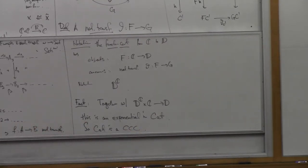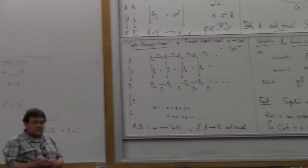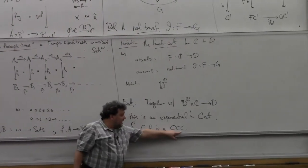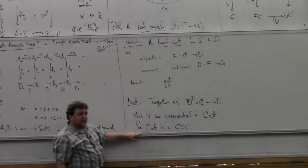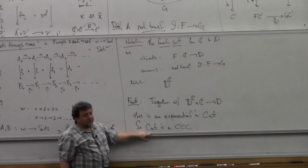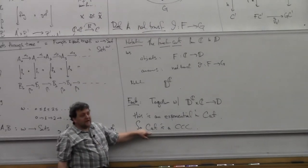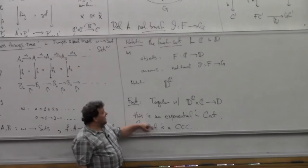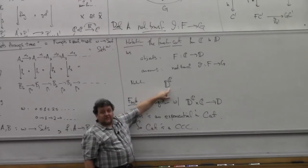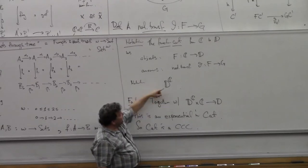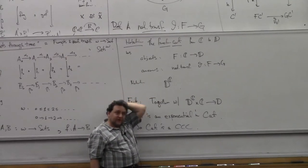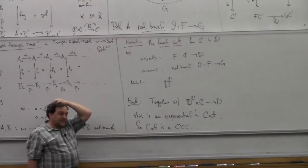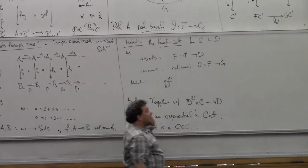That's kind of cool — what it tells us is that we've got the definition of natural transformation right. If we start out asking for a Cartesian closed structure on Cat, we know there's only one if there is one at all — it's unique up to isomorphism because these things are defined by universal mapping properties. So there's at most one way of making an exponential for any two categories up to isomorphism. The fact that this holds with that definition of natural transformation tells us we've got the definition right — you can deduce the definition of a natural transformation from this fact.